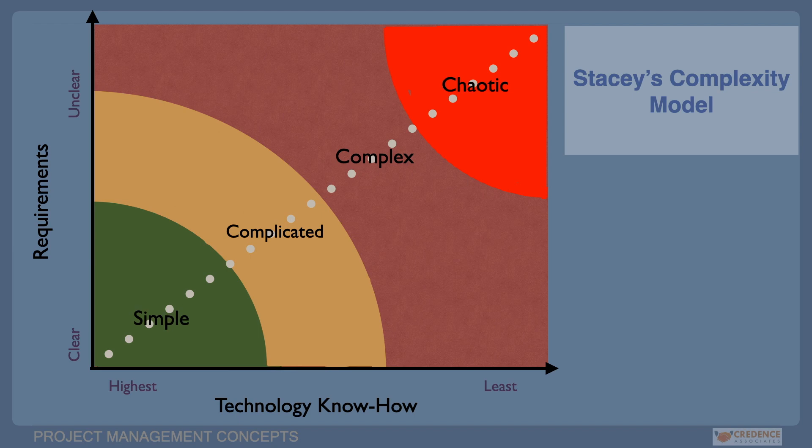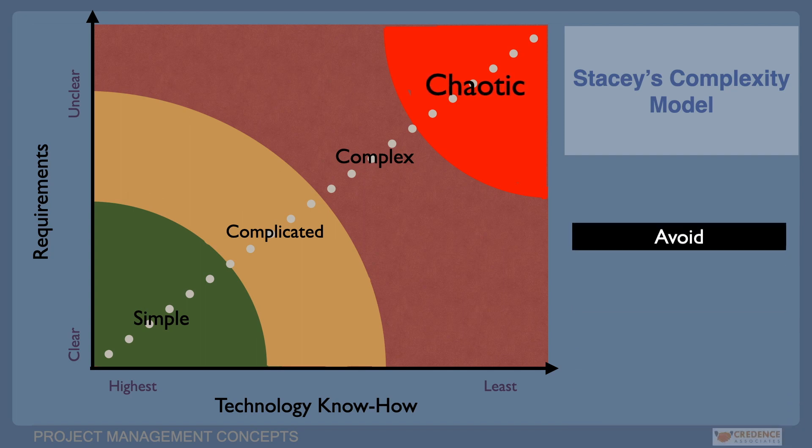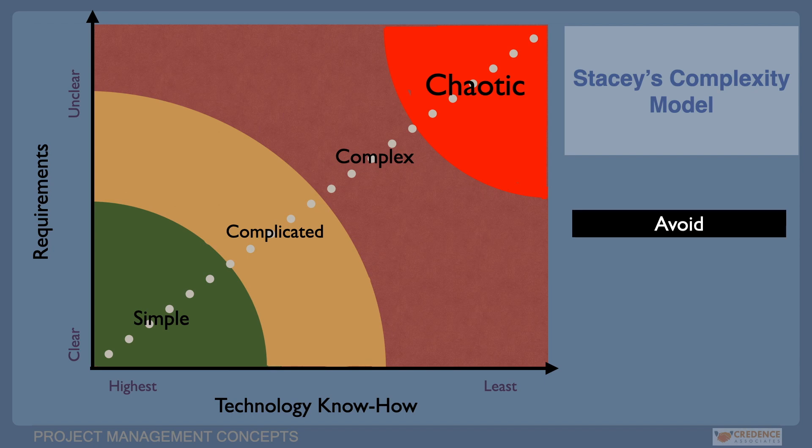On the flip side, we have chaotic projects. These are marked by high ambiguity and high uncertainty associated with high risk of failures. There are certain projects where the requirements and technology know-how are both unclear. Some may choose not to start this project. Some may be willing to accept a higher risk, depending on their risk appetite and risk thresholds.